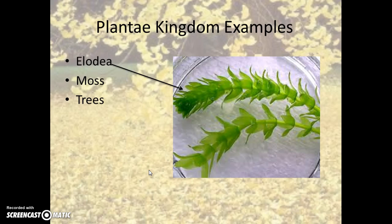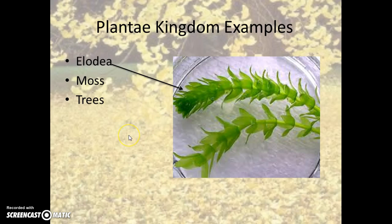Examples of plants include elodea, which is pictured — it's an aquatic plant — as well as moss, trees, shrubs, grass, and any kind of plant you can think of would fall into this kingdom.